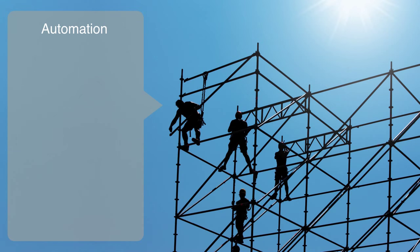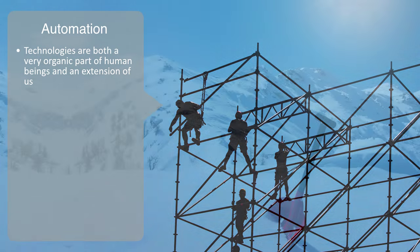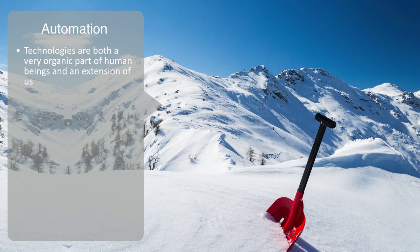Although technologies are different from natural systems, as we've already noted, we can only properly give them context by understanding them as also extensions of natural processes. Technologies are both a very organic part of human beings and an extension of us. Almost all technologies can be traced back to some initial process that was performed by our unaided natural physiology — whether we're talking about transportation performed originally by walking, or telecommunications performed originally by our vocal system. Through endless iteration of these natural processes and innovation, we have rationalized these processes and embodied them in external automated systems that can typically perform the process more efficiently and effectively.